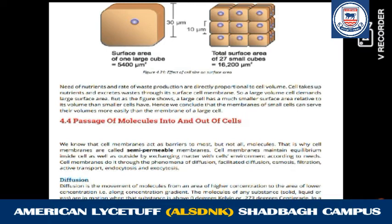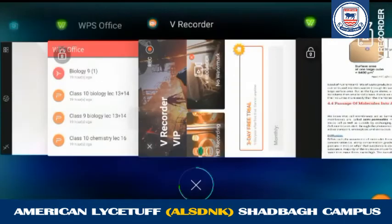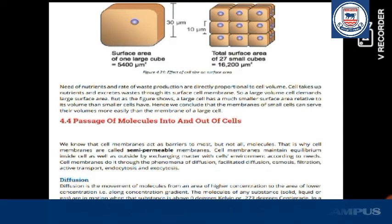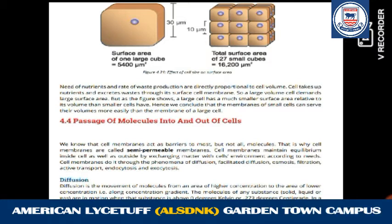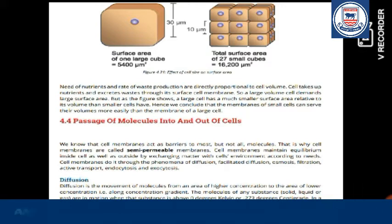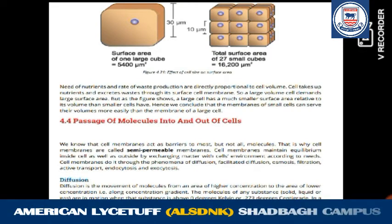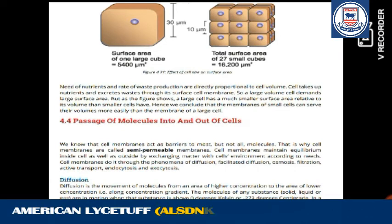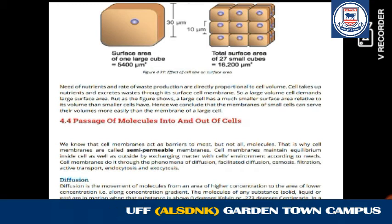The next topic is 4.4: passage of molecules into and out of cells. How do molecules travel from one part of a cell to another, or from one cell to another? We first studied the cell membrane — its function of semi-permeability, meaning the cell highly filters the material entering and leaving. All types of transport are: diffusion, facilitated diffusion, osmosis, filtration, active transport, endocytosis, and exocytosis.